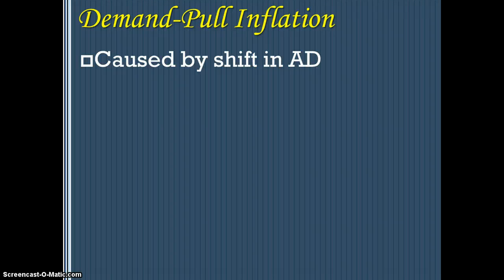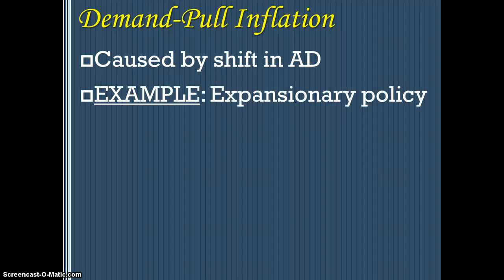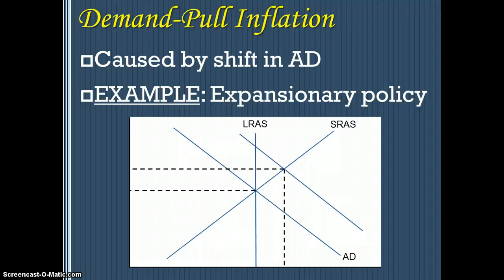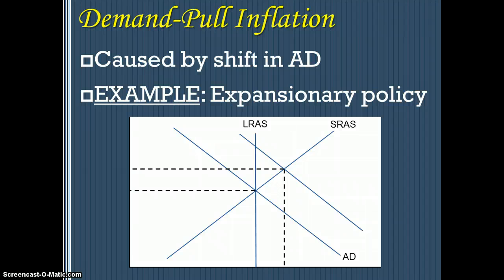The other type is demand-pull inflation, and that is something the government can do something about because they can create it. That's where we see a shift in aggregate demand to the right caused by expansionary fiscal or monetary policies — a move from equilibrium to a new short-run equilibrium. However, because money is neutral, this demand-pull inflation will eventually end up with much higher prices but the same amount of output as before.